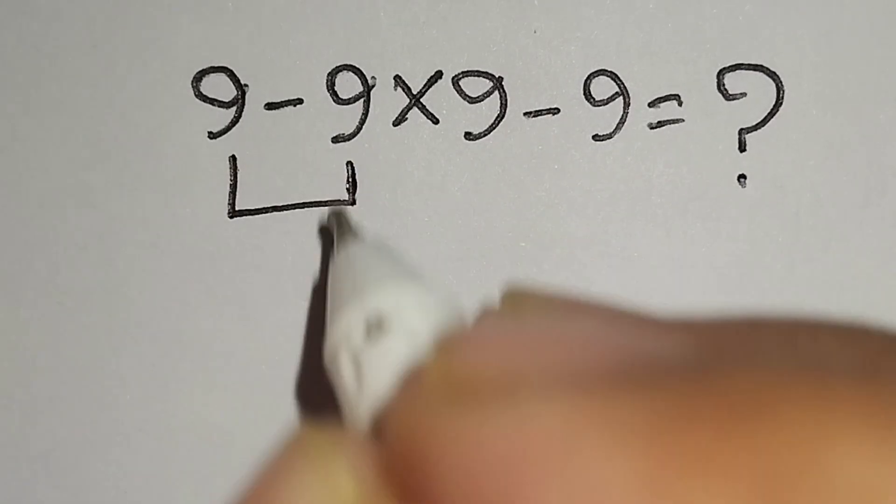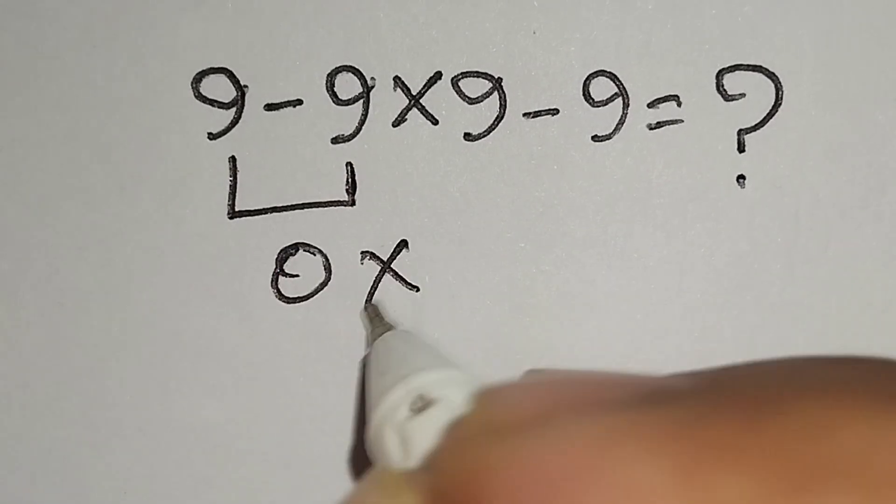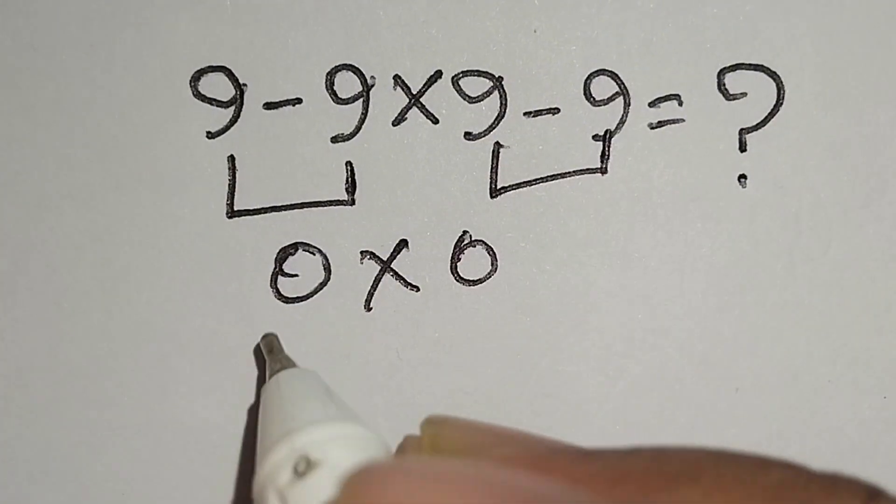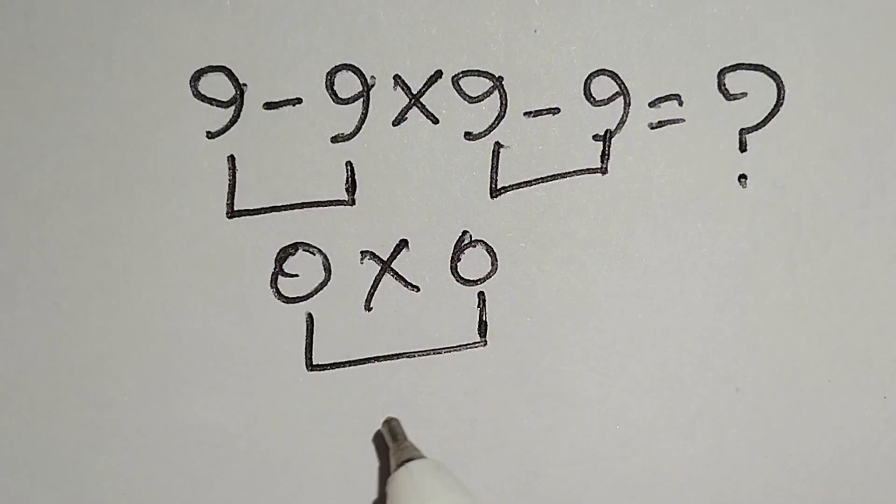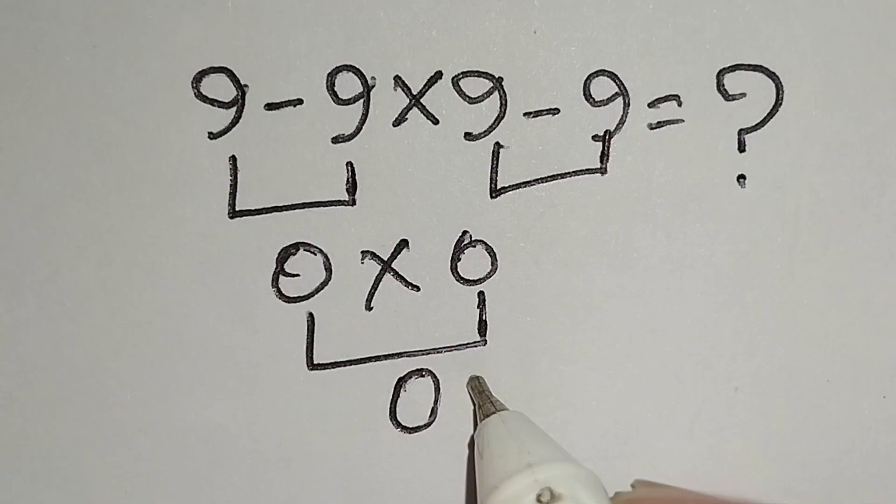Here this 9 minus 9 gives us 0, multiply 9 minus 9 gives us 0. 0 multiply 0 gives us 0. But it is not correct.